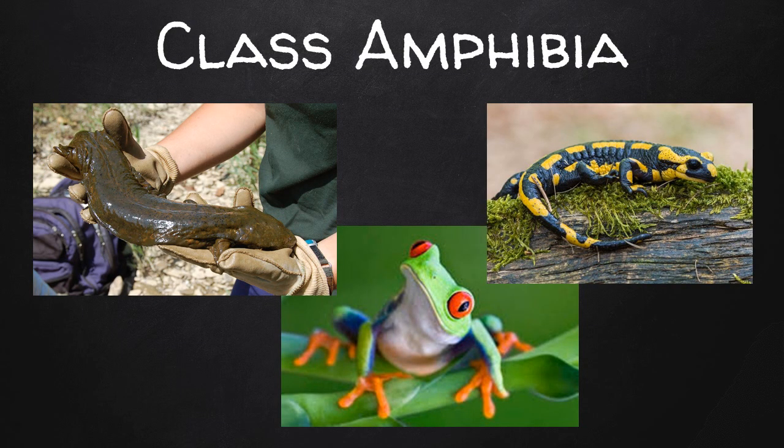Class Amphibia includes animals with thin, moist skin. Their larvae live in aquatic environments, but the adults can be aquatic or terrestrial. Frogs, toads, and salamanders are all amphibians.